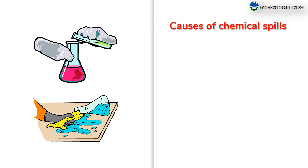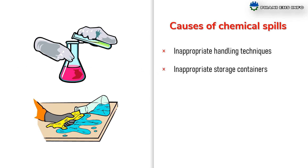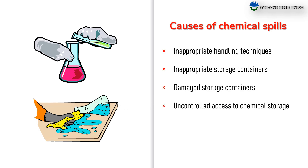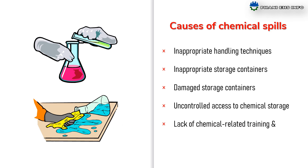The causes of chemical spills are: inappropriate handling techniques, inappropriate storage containers, damaged storage containers, uncontrolled access to chemical storage, lack of chemical-related trainings, and lack of supervision.